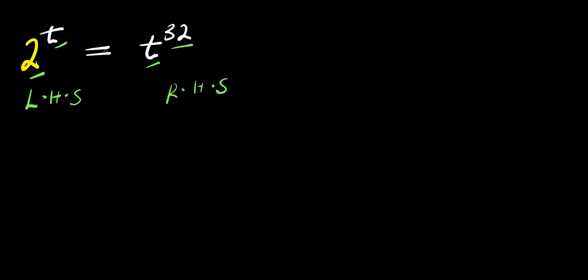Now if you observe very well, there is t here and there is t here. So we can easily move all the variables to one part of this equation, probably this part. So we have to eliminate this t here. For us to do that, we are going to multiply this exponent by 1 over t.